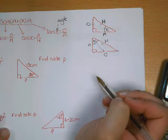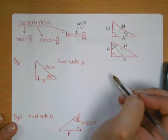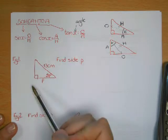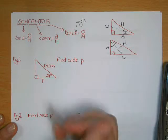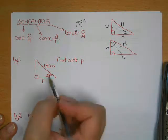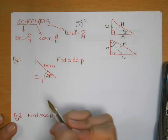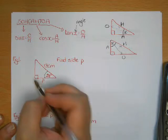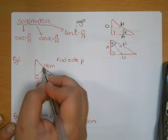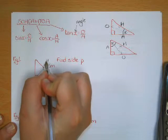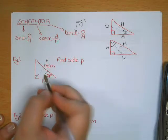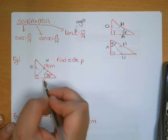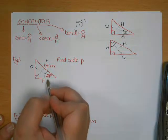To solve a trigonometric question — like this example, find side P — first identify the angle you're going to use. The angle at the bottom is the one we're using. Then label the sides: opposite the right angle is the hypotenuse, so 13 is the hypotenuse. Opposite the angle you're using is the opposite side, and beside it is the adjacent.